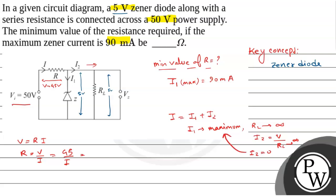Because I equals I1 plus I2. If I2 is zero, so I will be I1. That means R equals 45 by I1 plus I2. But for maximum I1, this will be equals to 45 by I1 max.